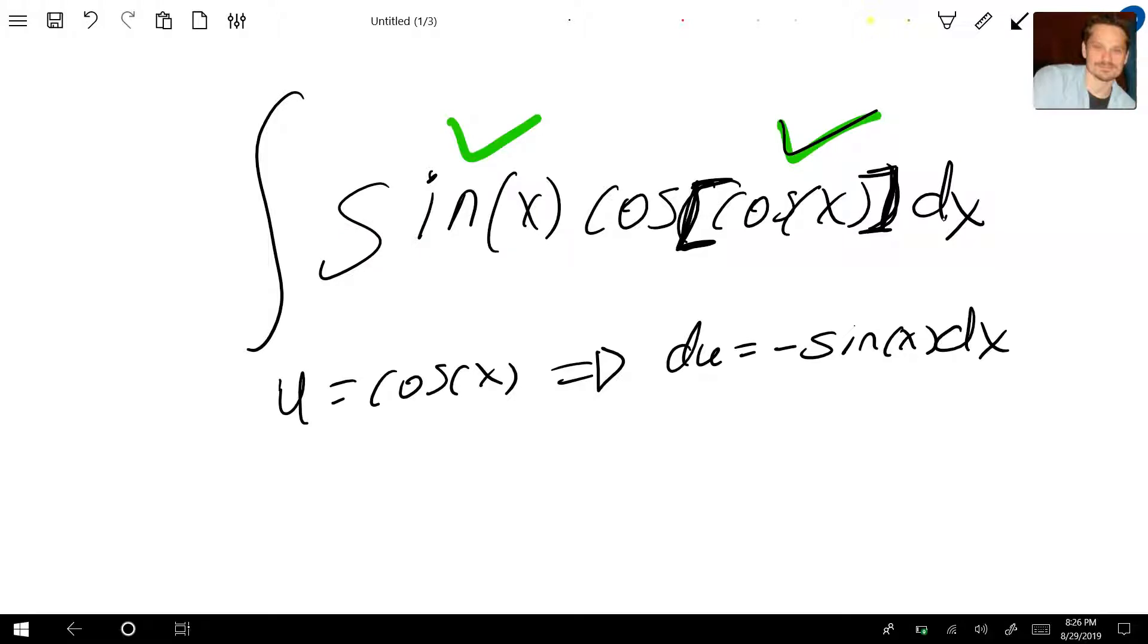The only thing is in the integrand, you don't have a negative out here. See that? So to fix that, what we can do is simply this. Take a look. You can put a negative one out here, and just make sure you also multiply by a negative one on the outside. Why is that the case? Because the two negatives multiplied give back a positive, and you haven't changed anything.